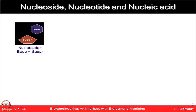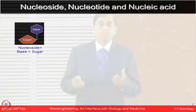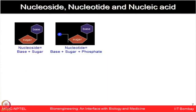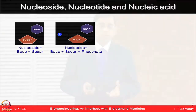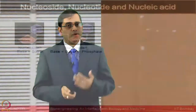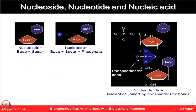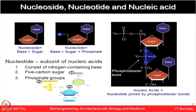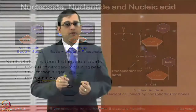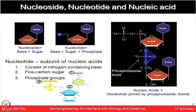These three components — base, sugar, and phosphate — together form nucleic acids. A nucleoside is formed by combining a base and a sugar. When we add phosphate to that, it becomes a nucleotide. When many nucleotides are joined with phosphodiester bonds, that is known as nucleic acid. So a nucleotide is a subunit of nucleic acid consisting of a nitrogen-containing base, a 5-carbon sugar, and a phosphate group.